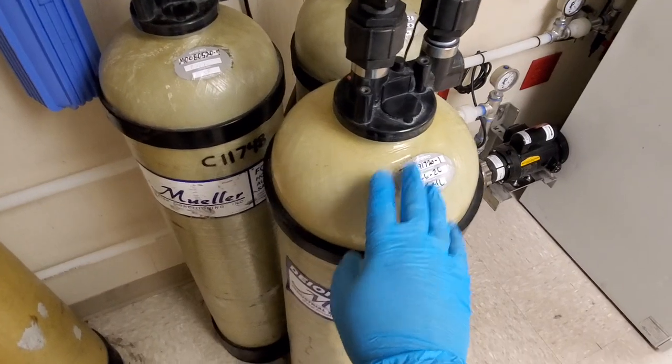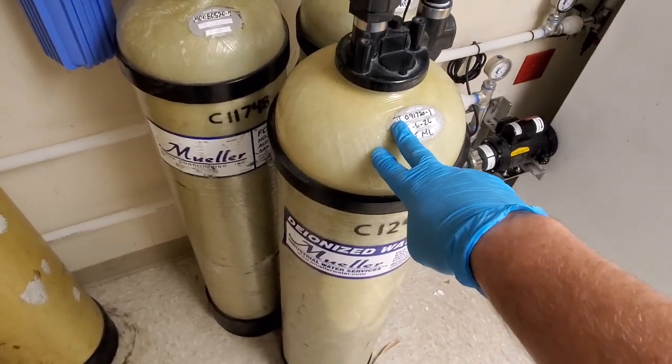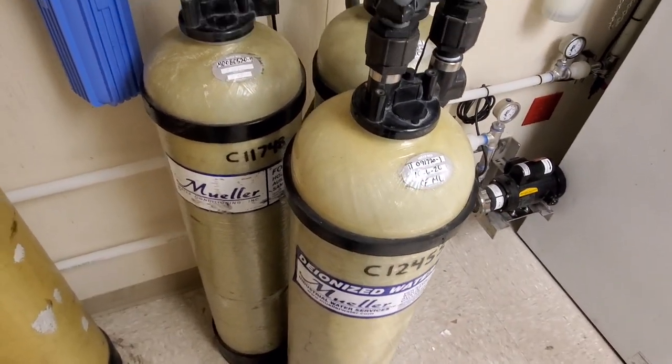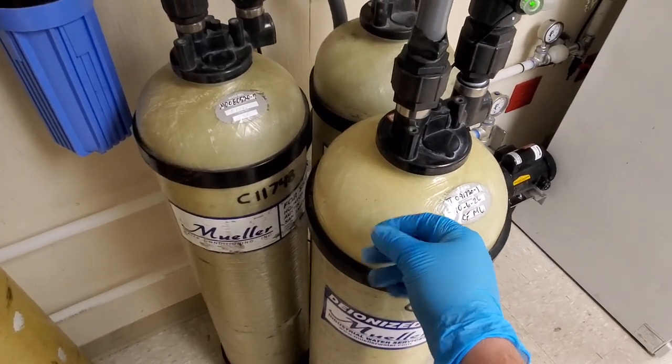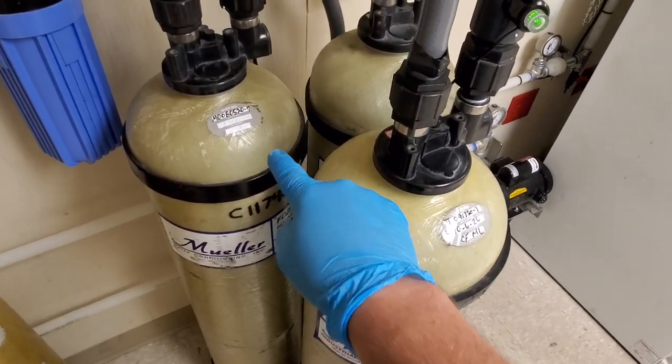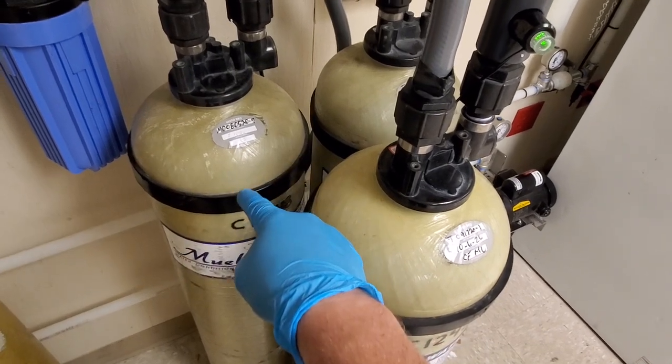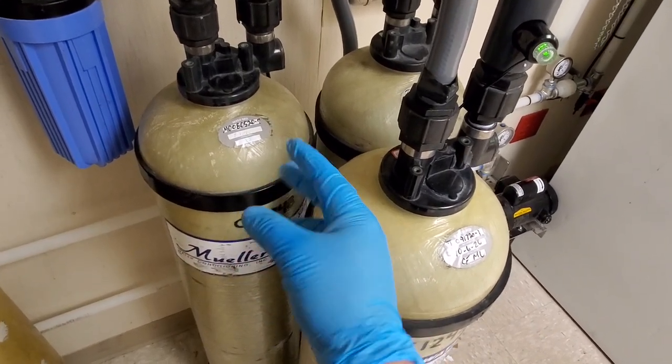And then you're going to go into these, which are called DI tanks or deionizing. And there's actually a resin, it's like a powdery substance. And what happens is the water comes into these tanks right here and there's going to be ions in it.